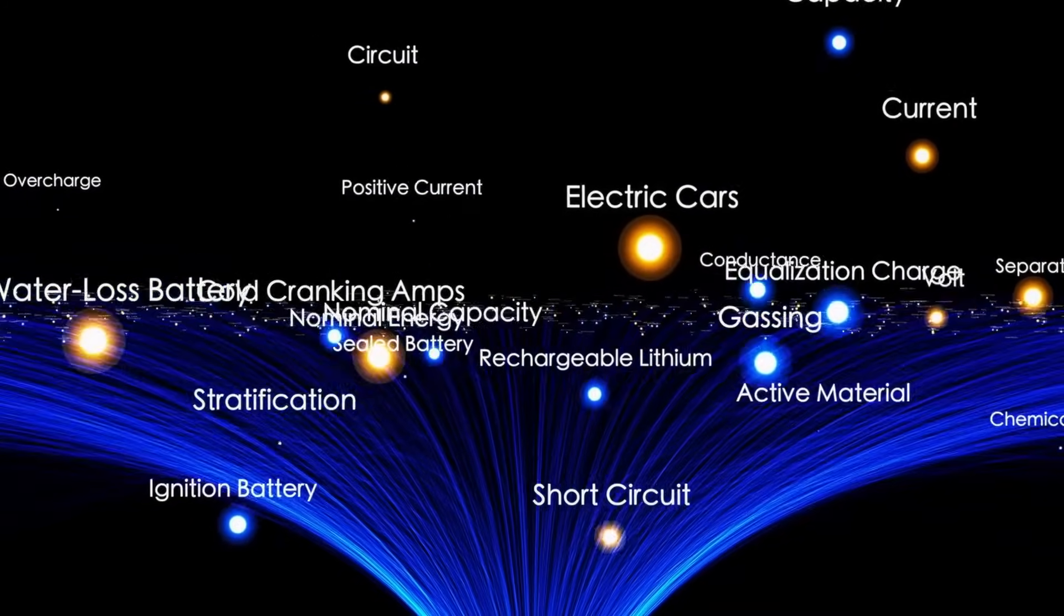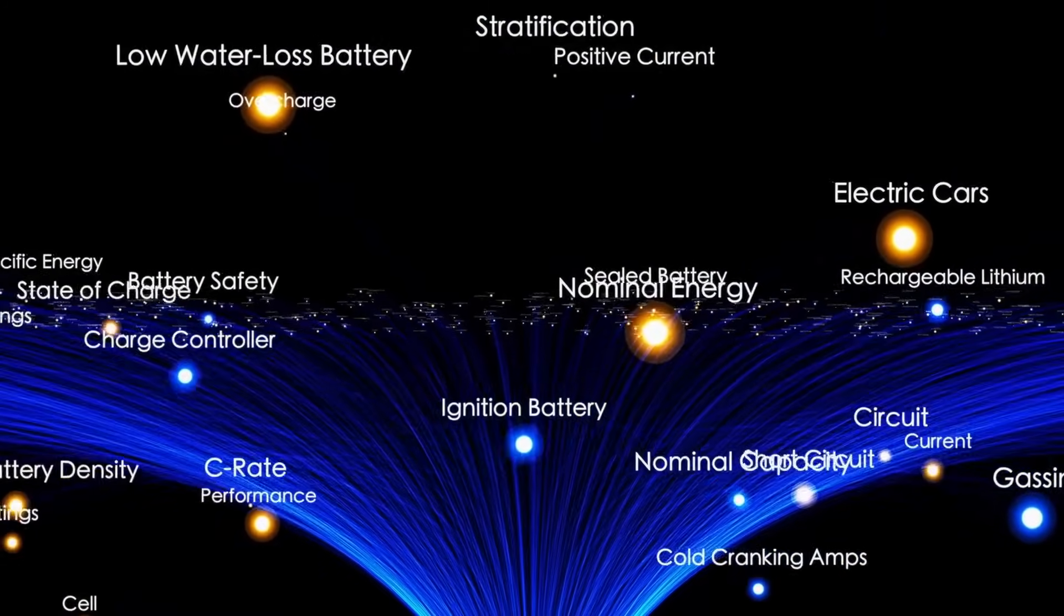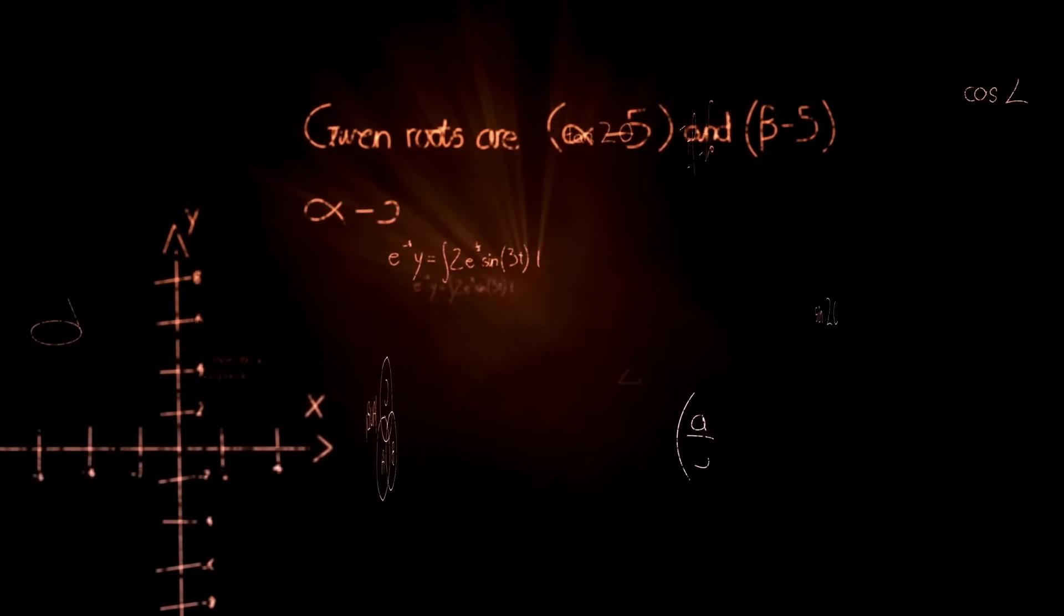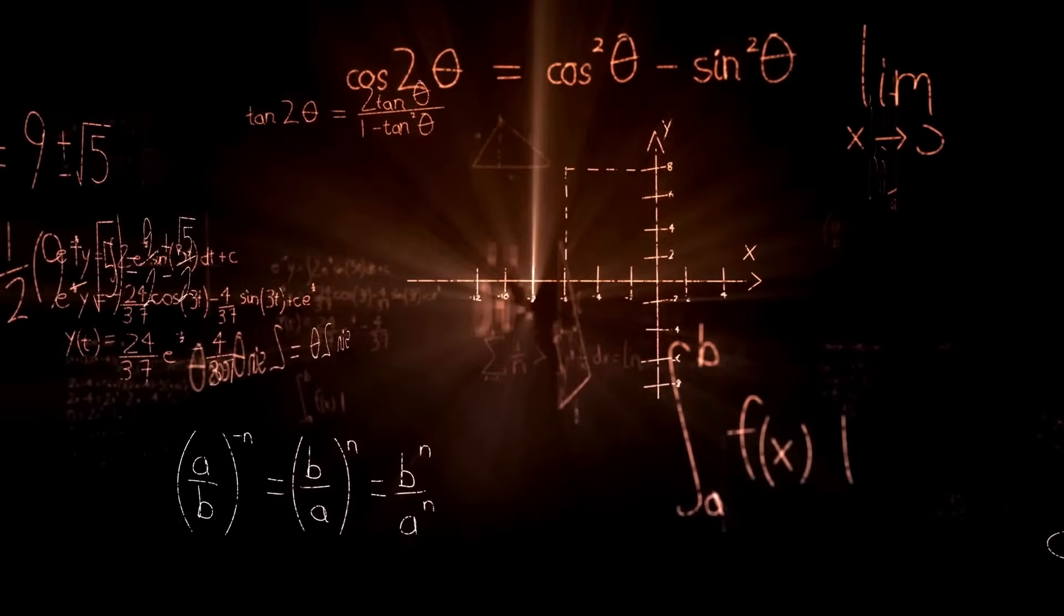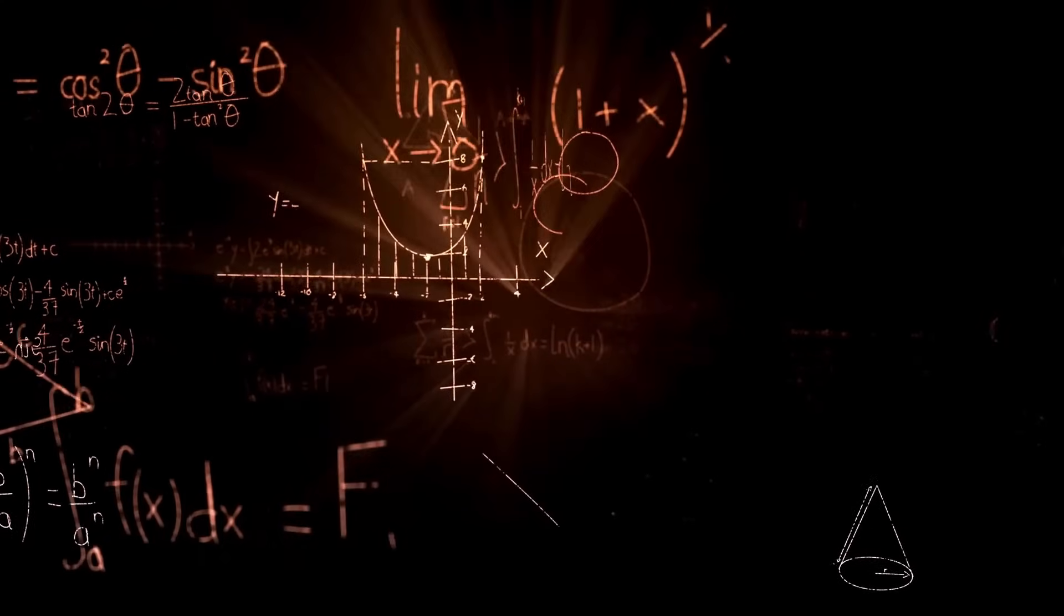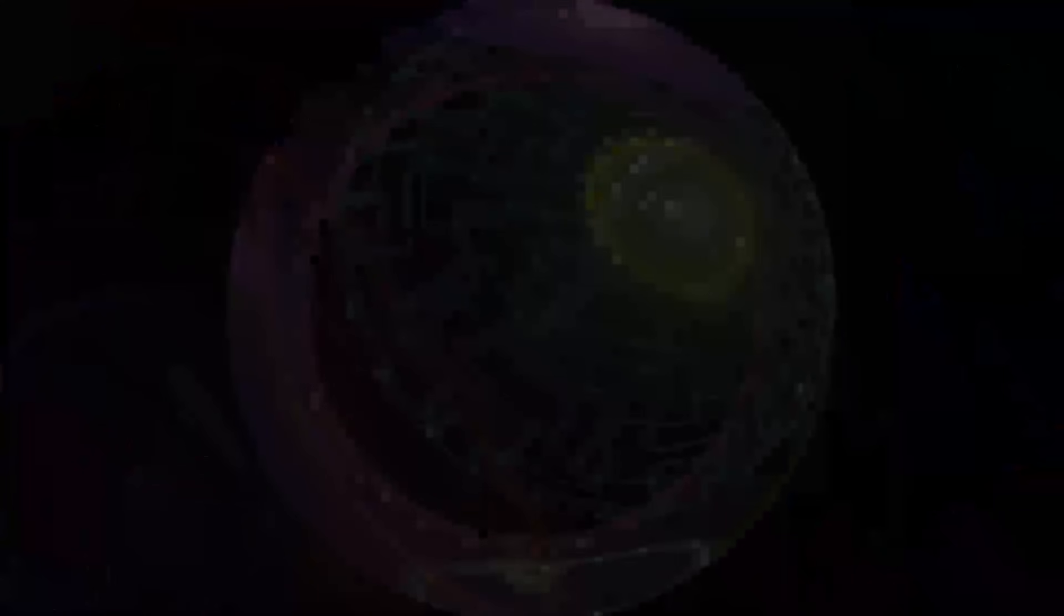Its path was taking it on a close swing around the sun, and based on its rapid brightening, forecasts predicted it could become visible to the naked eye, perhaps even rivaling the brightest stars in the night sky. The hype machine went into overdrive. It was dubbed the potential comet of the century. People all over the world were getting ready for a spectacular show. But the universe, it seems, had other plans.